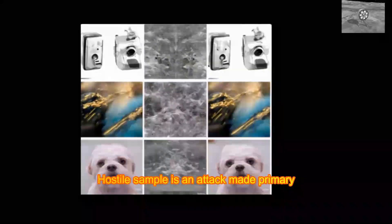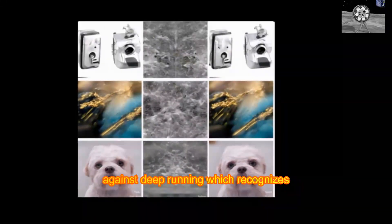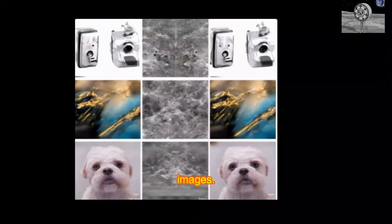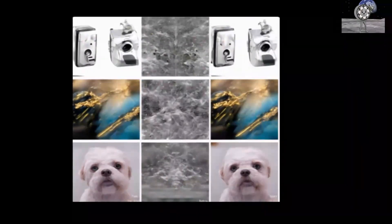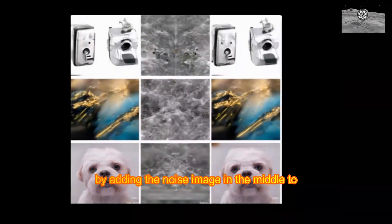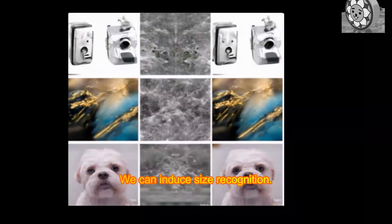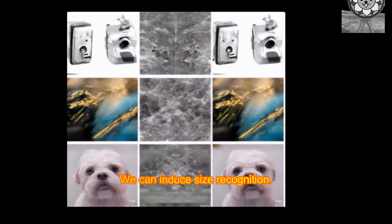A hostile sample is an attack made primarily against deep learning, which recognizes images. For example, by adding the noise image in the middle to the image on the left here, we can induce AI's recognition.